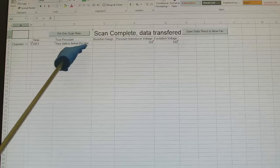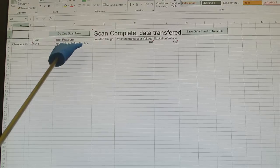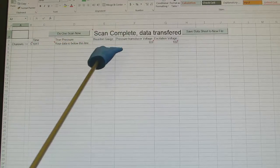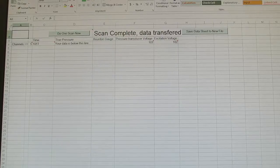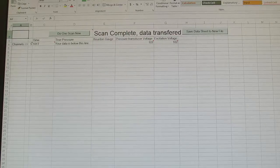You will manually record the true pressure, which is that which is represented by the weights, and the Bordon tube pressure, which you read off the gauge as you go along.